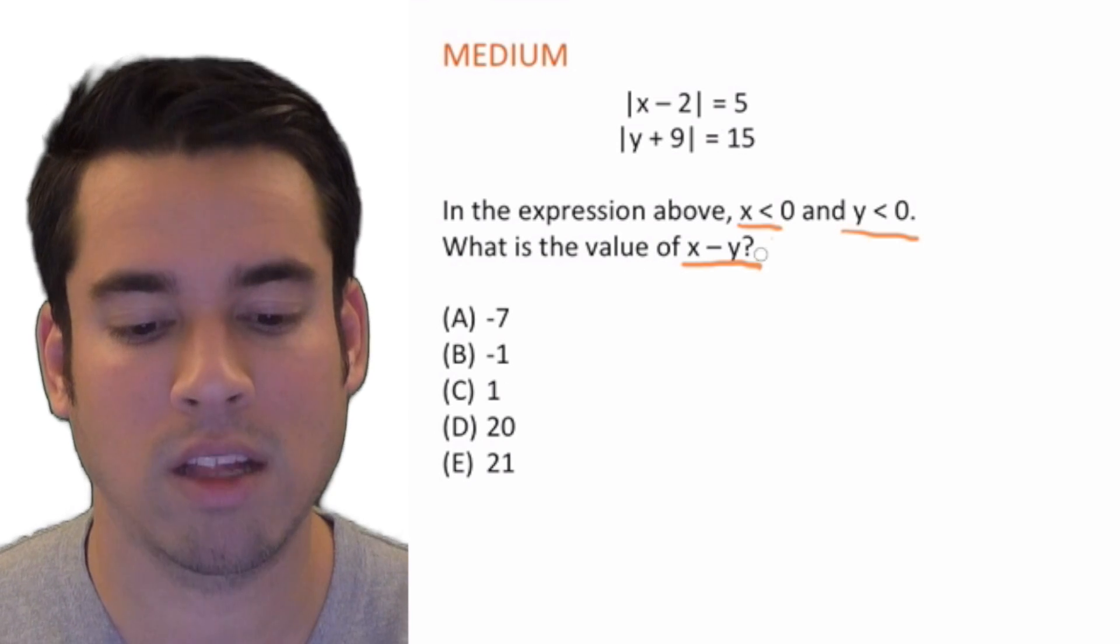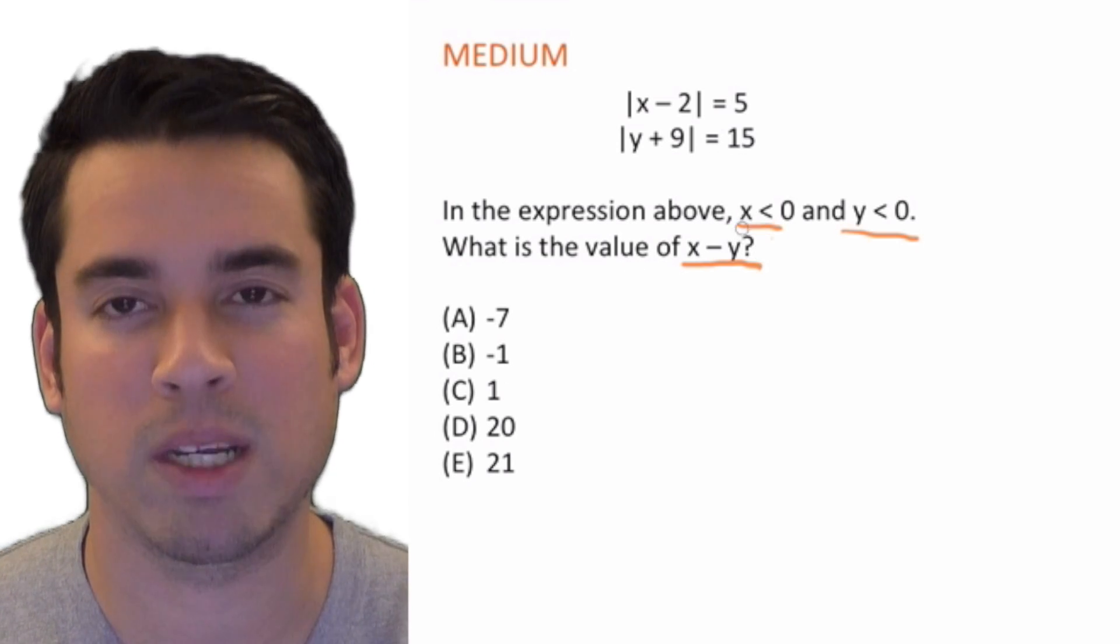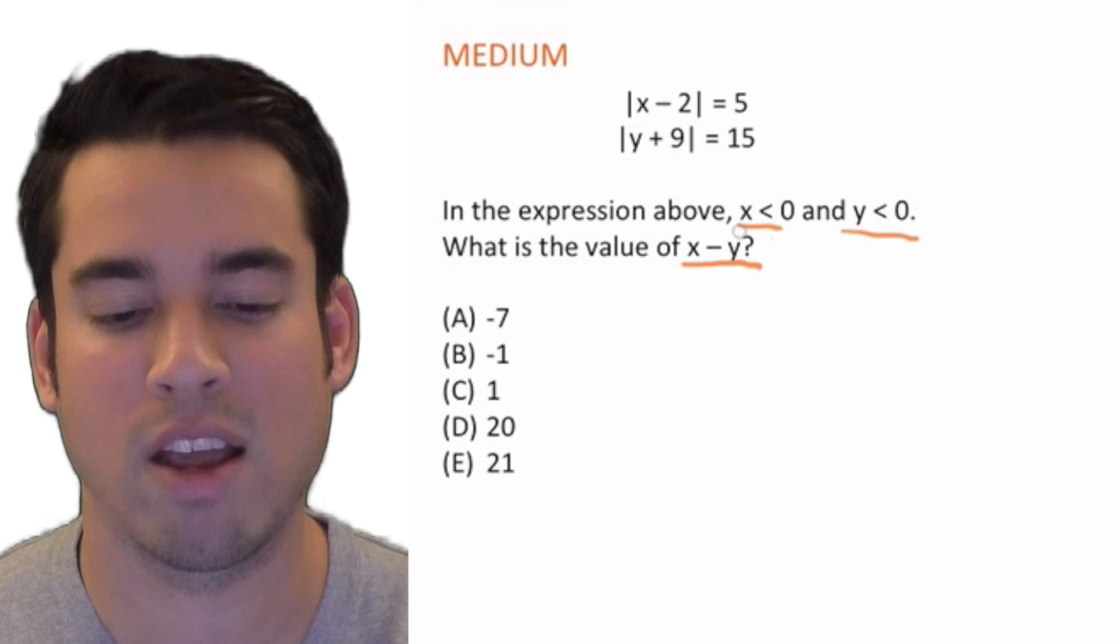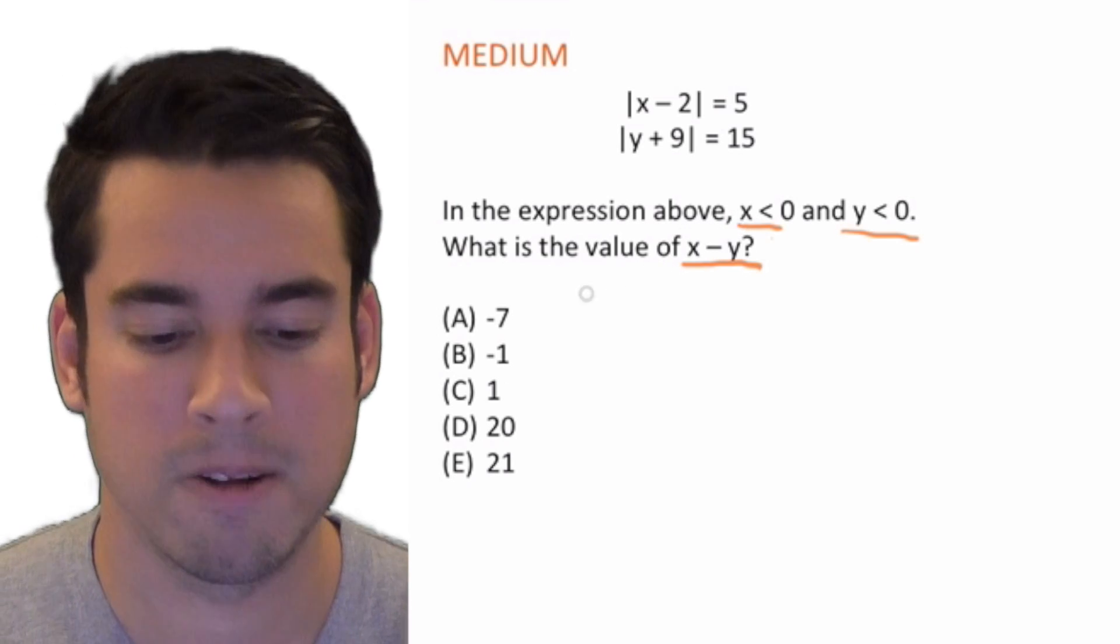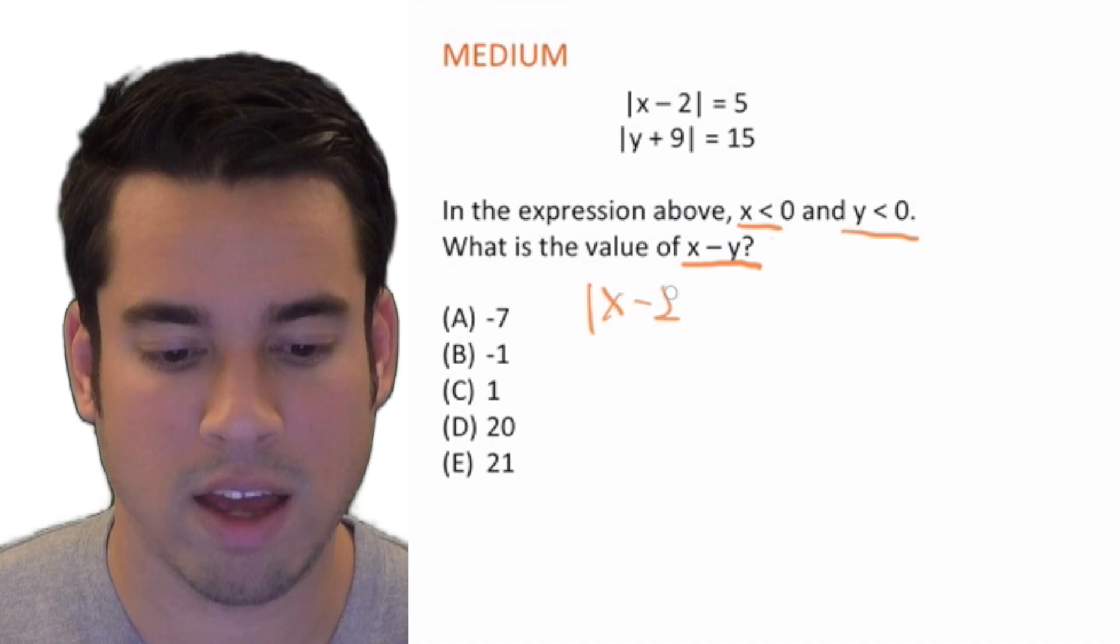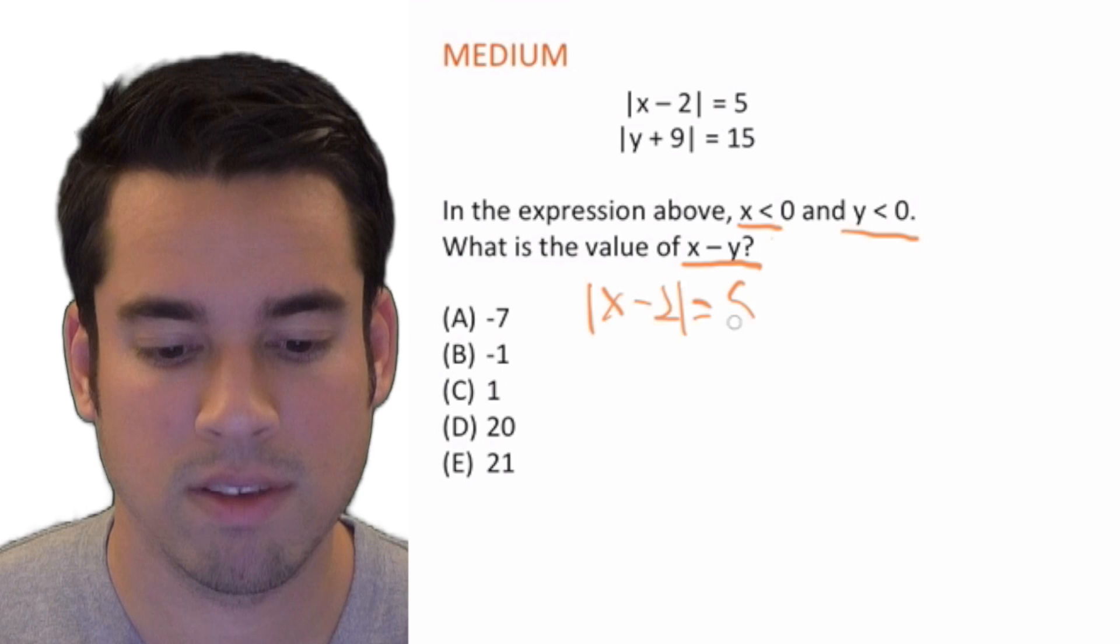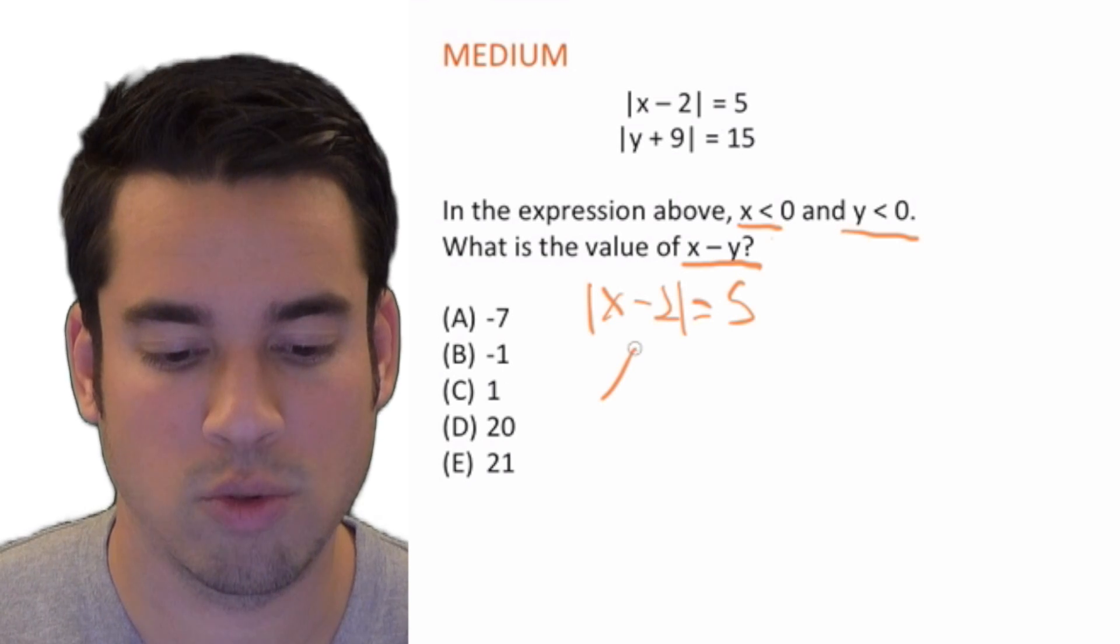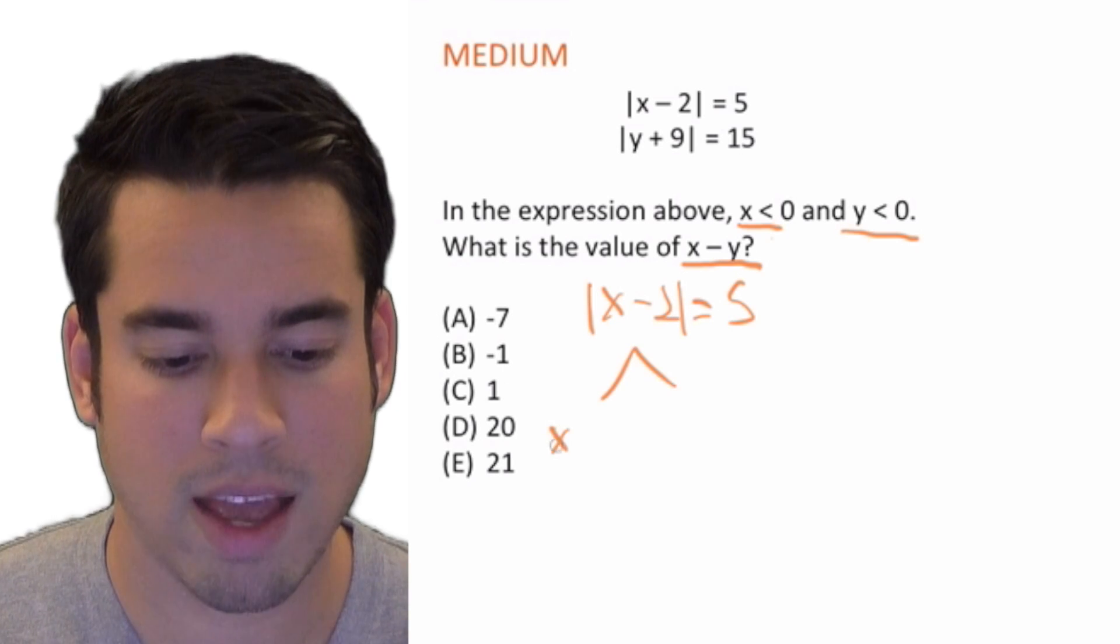Let me show you what I mean. So first of all, we're going to solve |x - 2| = 5, and we're going to split this into two equations. So first we have x - 2 = 5, right, where we just remove the absolute value, and then we have x - 2 = -5.